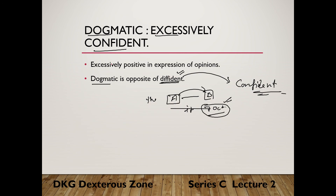Going ahead, another word is dogmatic, which means excessively confident. For example, imagine two people arguing — one is so confident about his opinion that he insists he is right, even when he may be wrong. Being excessively confident about one's opinion in that way is what we call dogmatic. Dogmatic is the opposite of diffident.